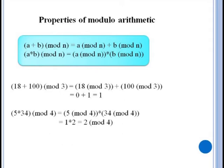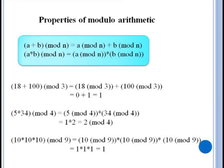Similarly to find five times 34 mod four it's easier to simplify them first. Five is equivalent to one and 34 is equivalent to two so five times 34 mod four is equal to one times two which is just two. How about ten times ten times ten mod nine? Since ten is equivalent to one mod nine, ten times ten times ten mod nine is the same as one times one times one which is just one.